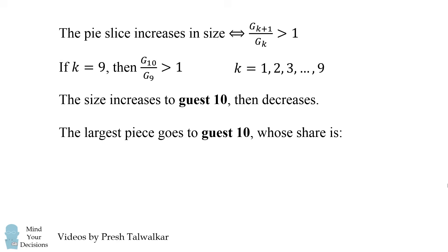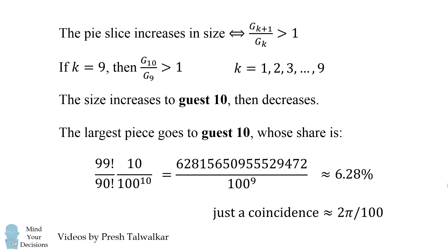Now just for fun, we can calculate the share of the entire pie. It'll be this fraction, which simplifies to be this fraction. And that's equal to approximately 6.28%. And just as a funny coincidence, this is approximately equal to 2 pi divided by 100. It's a pretty neat problem.